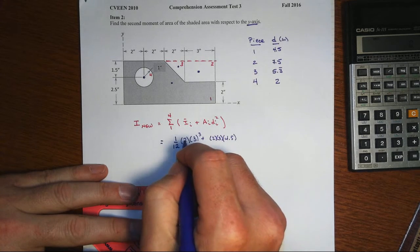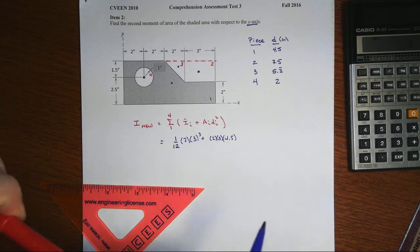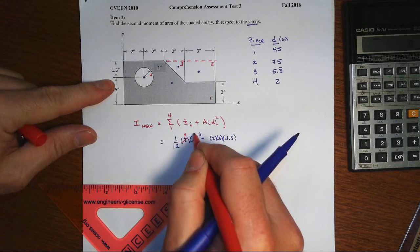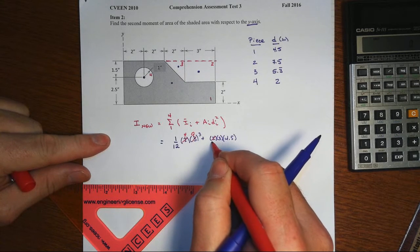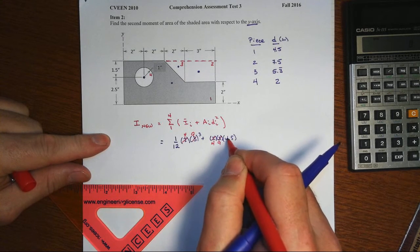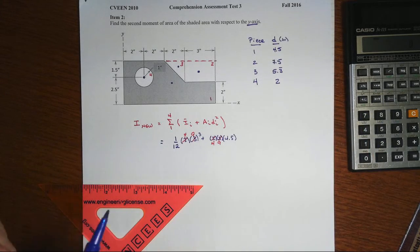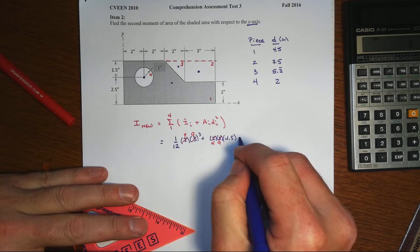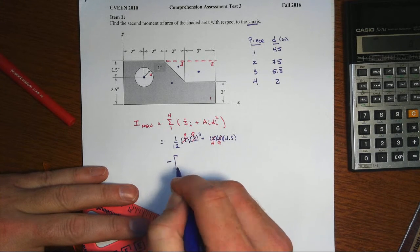So what I want to do here is change the numbers. That would be 1/12 of the base of 4 times the total height of 9, and then that will be 4 times 9, and then that's the correct D that goes along with it. That's the positive area. And then we're going to subtract off all of these other pieces.